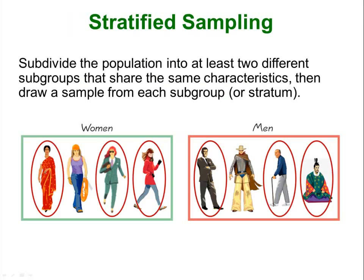Stratified sampling is our next type of sampling technique, where you take your items and group them. In this case they are only grouped by gender, but you can group them by multiple ways — it doesn't have to be just two. You can group people by political affiliation: Republican, Democrat, Independent — there are three. Then you take a random sample from each of those groups.